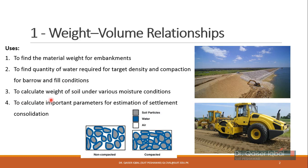The weight-volume relationship is also important to calculate the weight of soil under various moisture conditions. The weight of soil comprises two elements: the weight of soil solids, which remains constant, and the weight of water. Under different moisture conditions, the soil can have different total weights. These relationships are also important for estimating settlement and consolidation parameters like void ratio, porosity, and volume of voids.